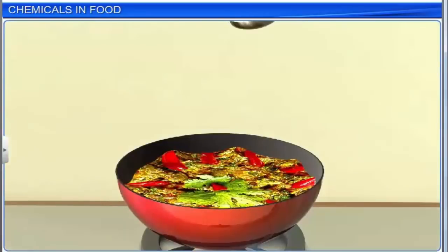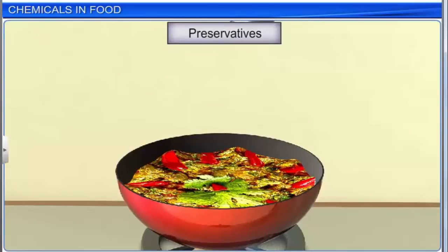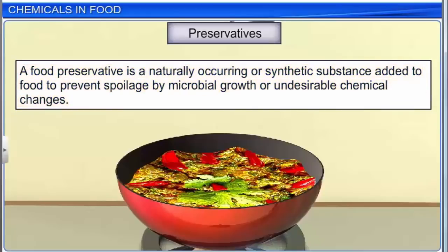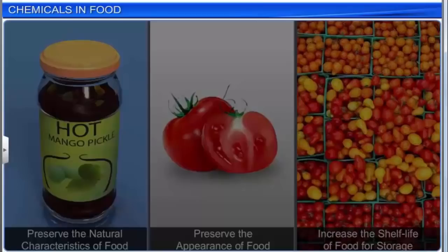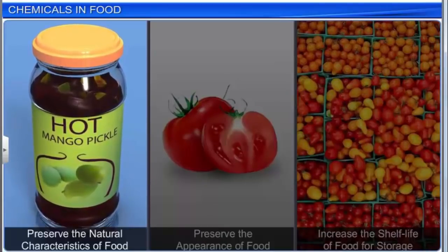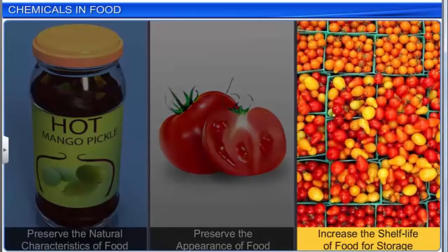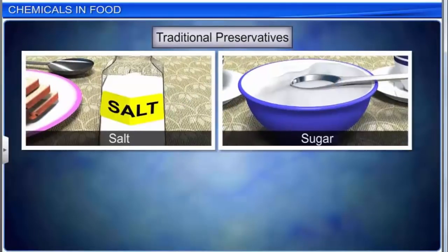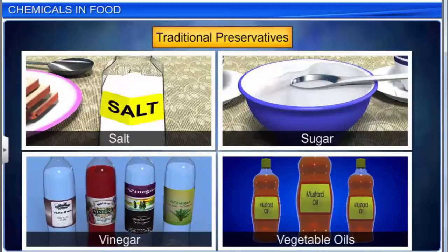Now let's learn about food preservatives. A food preservative is a naturally occurring or synthetic substance added to food to prevent spoilage by microbial growth or undesirable chemical changes. Food preservation is basically done for three reasons: to preserve the natural characteristics of food, to preserve the appearance of food, and to increase the shelf life of food for storage. Natural substances such as salt, sugar, vinegar, and vegetable oils are traditional preservatives often used to prepare pickles and jams. Sugar and salt are the earliest natural food preservatives that very efficiently inhibit the growth of bacteria in food.